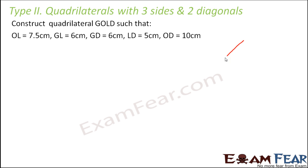So this is how the rough sketch could be. So let us say this is GOLD, so here OL is given, so this OL is given as 7.5, GL is nothing but the diagonal. So GL is given as 6.